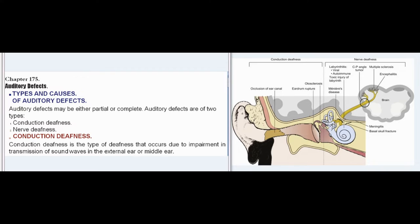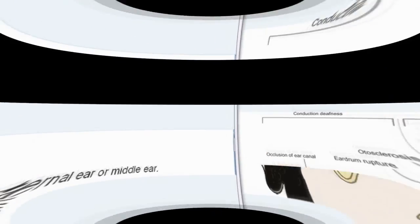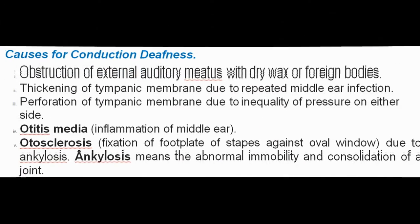Conduction Deafness is the type of deafness that occurs due to impairment in transmission of sound waves in the external ear or middle ear. Causes for Conduction Deafness: